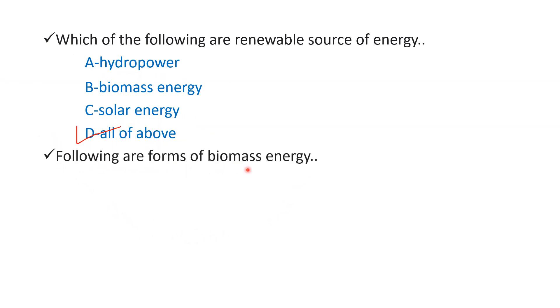Following are forms of biomass energy. So option A wood, option B animal waste, option C both of above and option D none of above. So over here right answer is option C both of above. Yani ki biomass energy is which is formed by wood or animal waste. To biomass energy consider hoti hai. Right answer would be animal waste. Is mein biomass energy produce hoti hai.